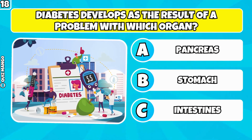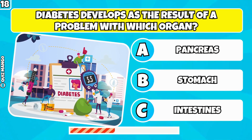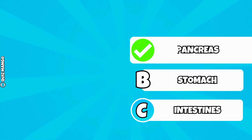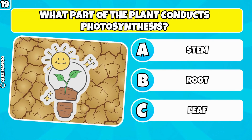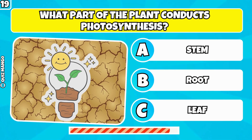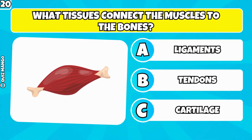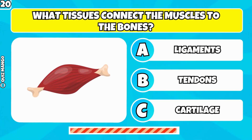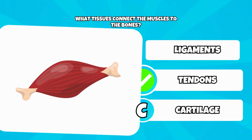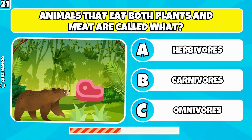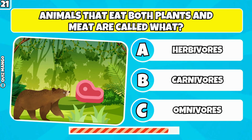Diabetes develops as the result of a problem with which organ? It's the pancreas. What part of the plant conducts photosynthesis? It's the leaf. What tissues connect the muscles to the bones? Tendons. Animals that eat both plants and meat are called what? They're omnivores.